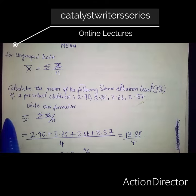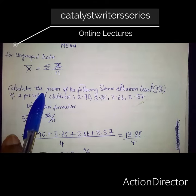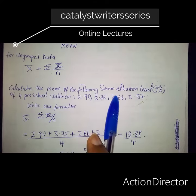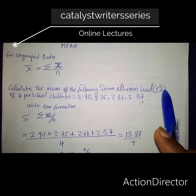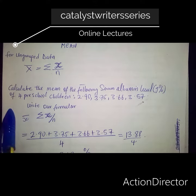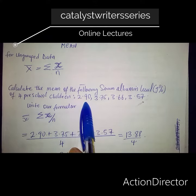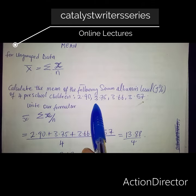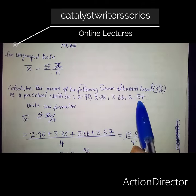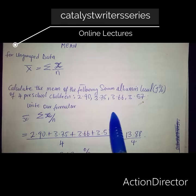Now using this question: calculate the mean of the following serum albumin levels in grams percent of 4 pre-school children: 2.90, 3.75, 3.66, 3.57.